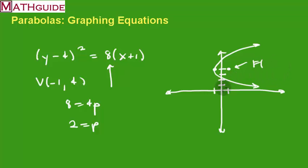So there's our focus, which is 1, 4. We've got our vertex, our vertex right there is equal to negative 1, 4.